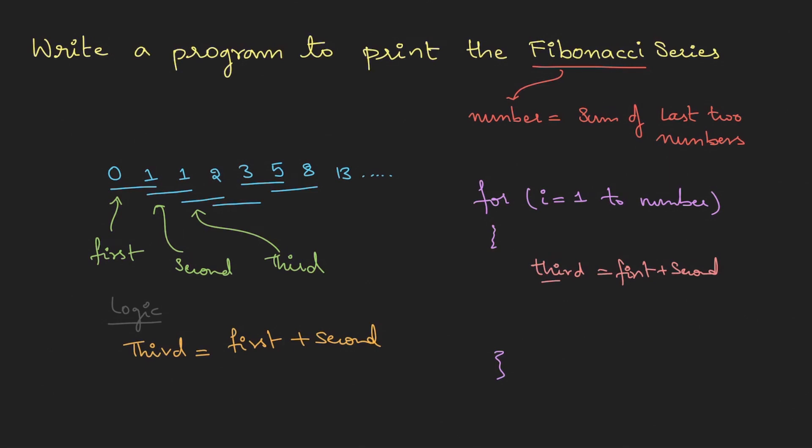Now as we calculate the third, we just need to change the pointers. We're going to shift first to the second number, second to the third number, third to the fourth number. So in the program I can say first will be replaced with the second number, and second is replaced with the third number.